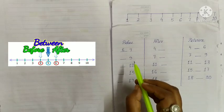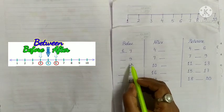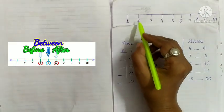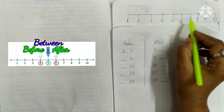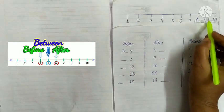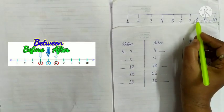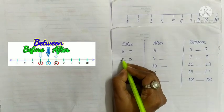Next, 9. What comes before 9? 1, 2, 3, 4, 5, 6, 7, 8, 9. Before 9 is 8. Write 8.